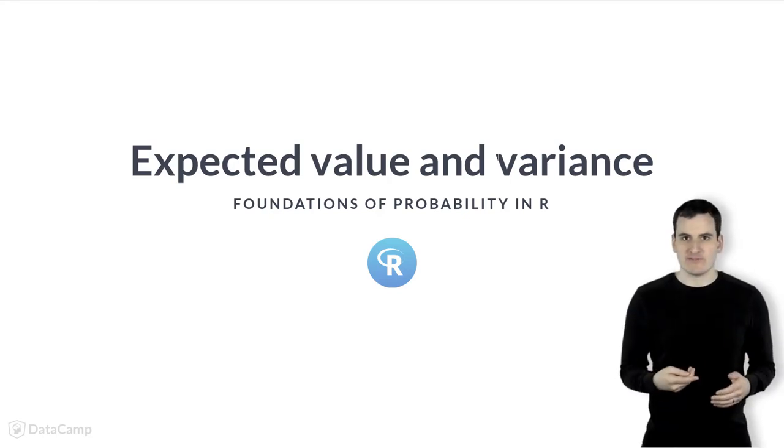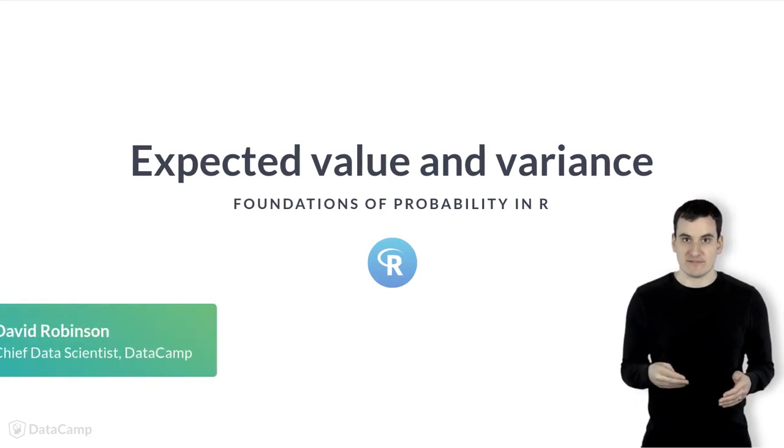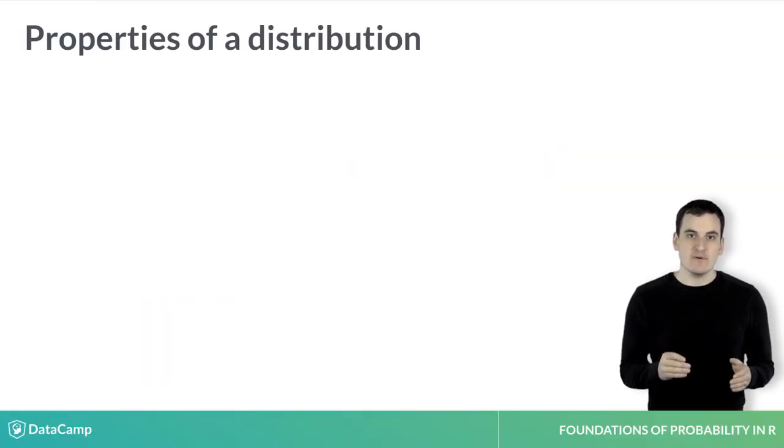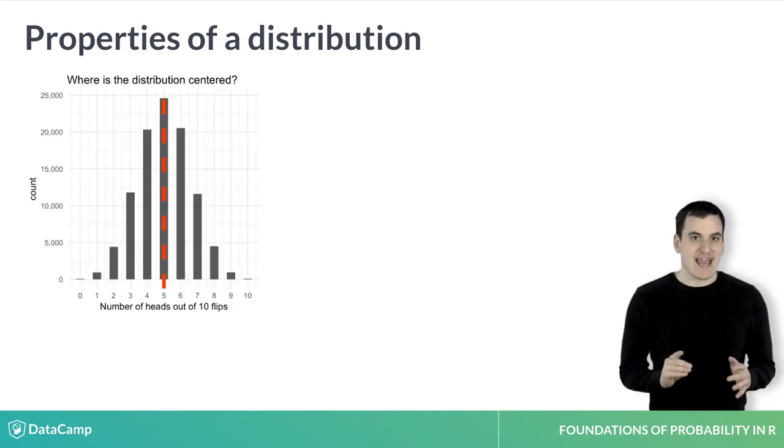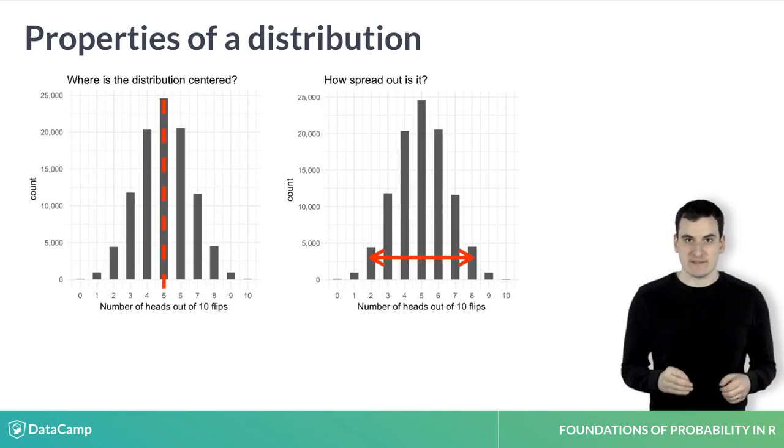When we talk about a probability distribution, we're often interested in summarizing it into a few descriptive statistics. Two of the most interesting properties are where the distribution is centered and how widely spread out it is. We describe these with the expected value and the variance.